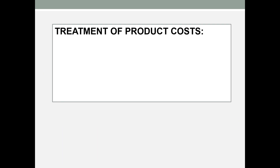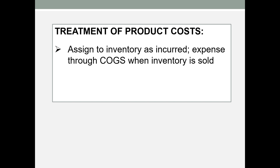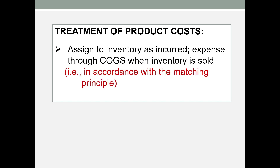How do we treat product costs? Think back to your first accounting course. When you bought inventory, you didn't put it in cost of goods sold immediately — you recorded it as an asset called inventory. When the goods were sold, then you expensed it through cost of goods sold on the income statement. So it's first an asset, and becomes an expense when sold. This accommodates the matching principle.